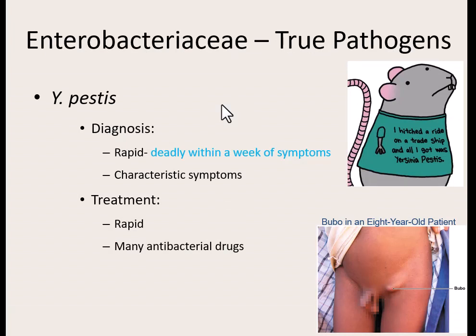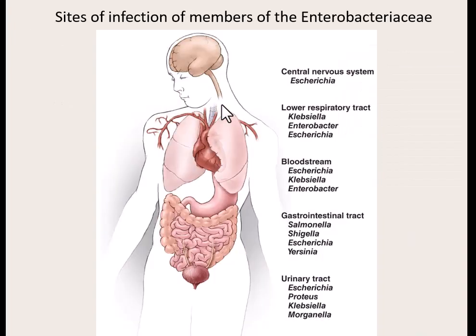Yersinia pestis is very deadly — it causes the plague and generally kills within a week of symptoms. Diagnosing it has to be rapid because treatment timing is critical. It is treatable, but you have to get treated as fast as possible because sometimes it's just too late. We do have antibiotics that can treat it; however, 200 years ago before antibiotics, there was nothing to treat it with, and it became extremely deadly. These days we can easily treat it. Most Enterobacteriaceae, other than Yersinia pestis, are all intestinally driven, but if they get somewhere else they can still cause disease.